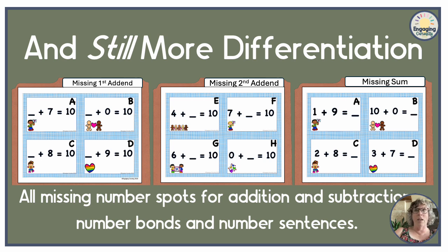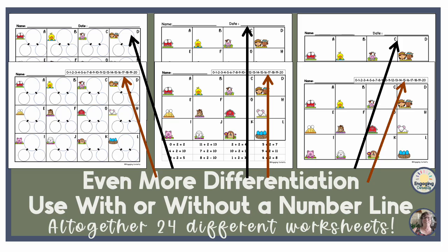And then the matching missing number spot for subtraction activities. They come even further differentiated with and without a number line, because if you want to formatively assess their math fact competency, you'd want to do it without a number line.